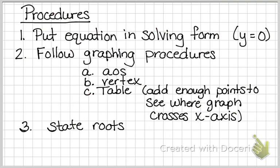Our procedures: we need to make sure that we always put the equation in solving form, so y = 0. We follow the graphing procedures that we know. Find our AOS, our vertex, and then a table to have enough points so that we can see where our graph or our parabola is going to cross the x-axis. And then we're going to state those roots. If we have roots, one root, we would state one. No root, you say no solution or no roots. And then two solutions, those two solutions.